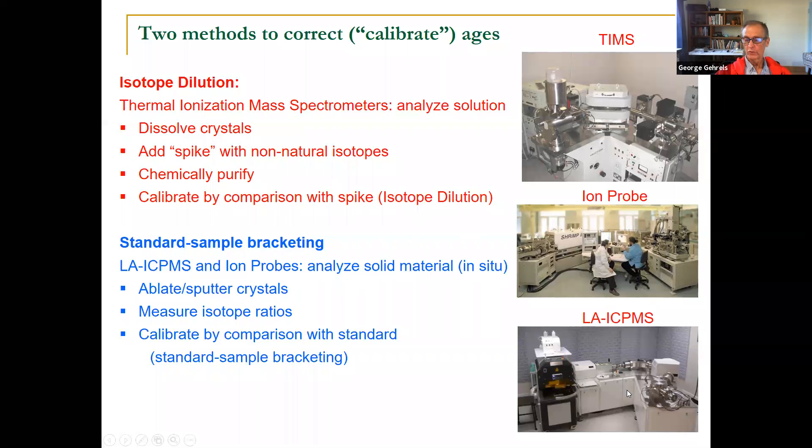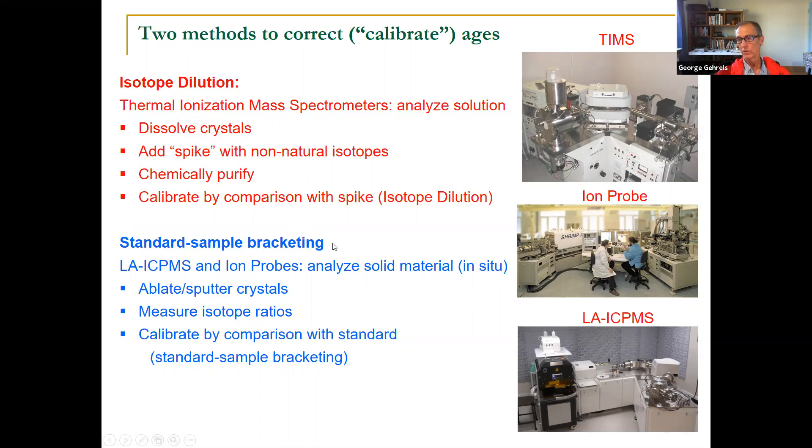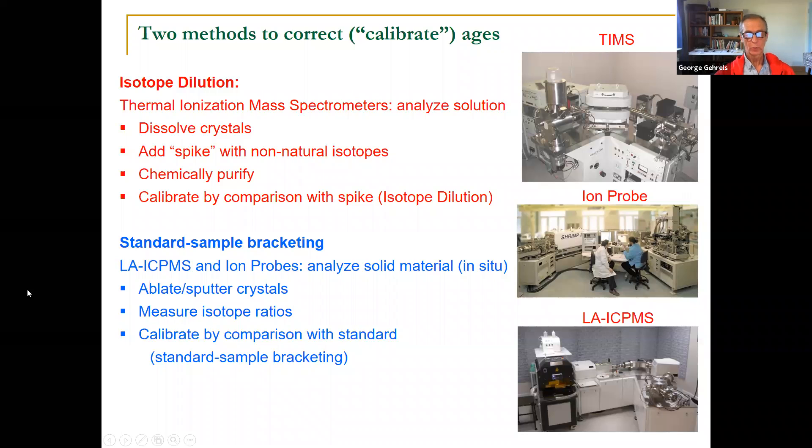For ion probes and laser ablation systems, we do this by standard sample bracketing. That's because we're not going to dissolve our sample. We want to leave our sample crystal in situ as a solid material. So we can't add other isotopes to that. So what we're going to do is we're going to ablate out material or sputter the material out of the crystal. We're going to measure the isotope ratios that come off and then we're going to calibrate by comparison with some kind of a standard. This is a really challenging aspect of doing this type of calibration.